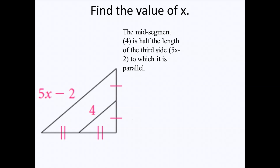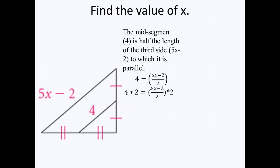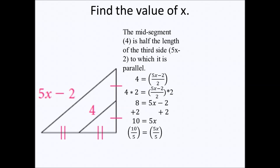Find the value of X. The mid-segment 4 is half the length of the third side 5X minus 2, to which it is parallel. The equation is: 4 equals (5X minus 2) divided by 2. Multiplying both sides by two gives 8 equals 5X minus 2. Adding 2 to both sides gives 10 equals 5X. Dividing both sides by five gives 10 divided by 5 equals 2, and 5X divided by 5 equals X. Therefore, X equals 2.